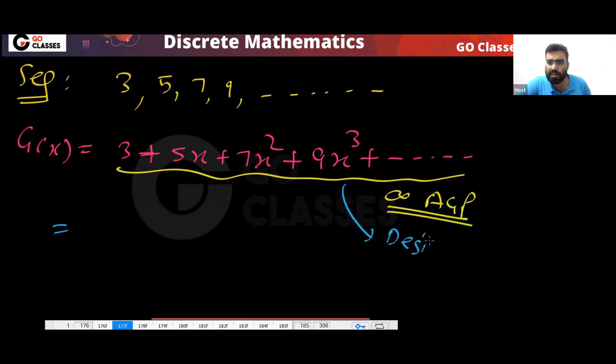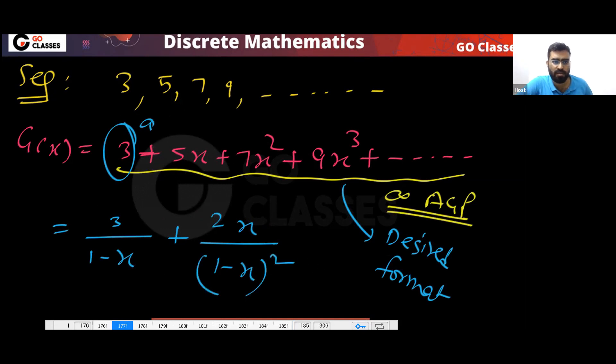Does it have the desired format? Yes, it has the desired format. This is your A. So the answer will be 3 upon (1 - R) plus D. What is D? D is two because the difference is two, divided by (1 - X) whole square.